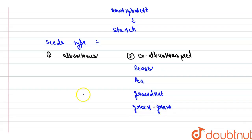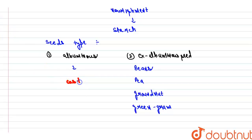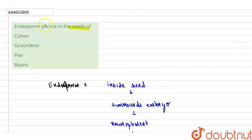Albuminous seeds are seeds that have persistent androsperm in them. Examples of albuminous seeds are castor and maize.